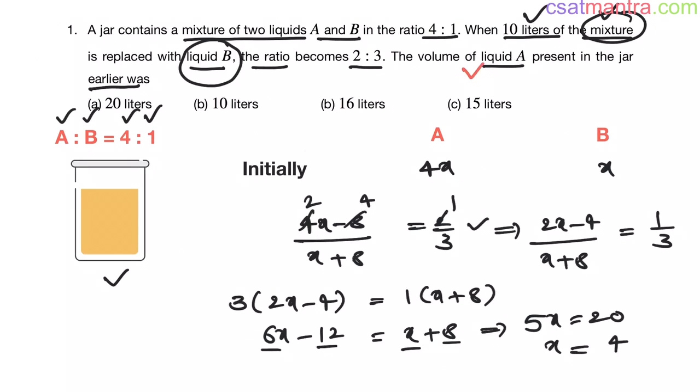We need volume of liquid A present in the jar earlier. Initial quantity that is 4X, 4 into 4 that is equal to 16. So, our answer is C. Here it is wrongly mentioned, sorry. So, our answer is C, 16 liters.